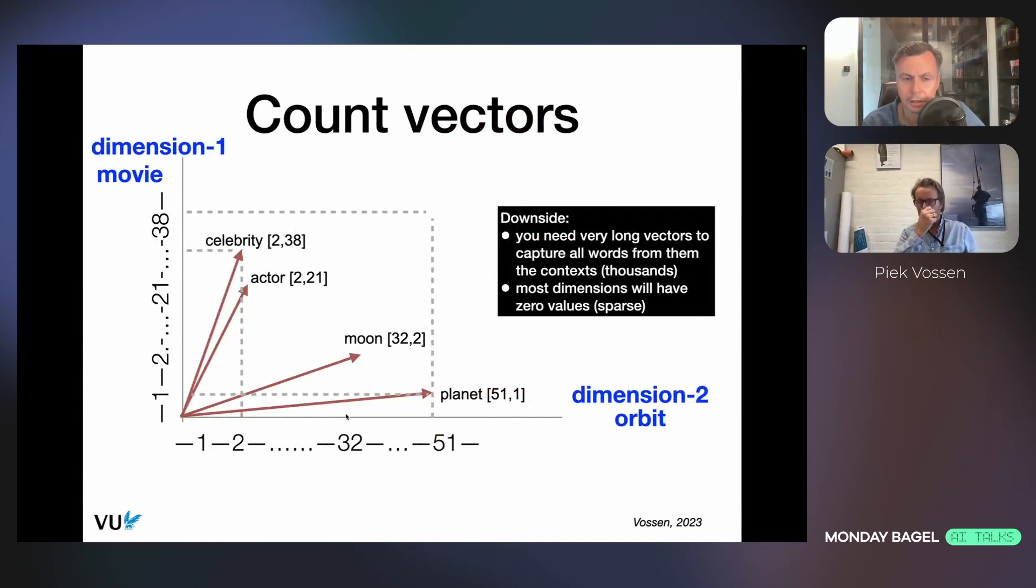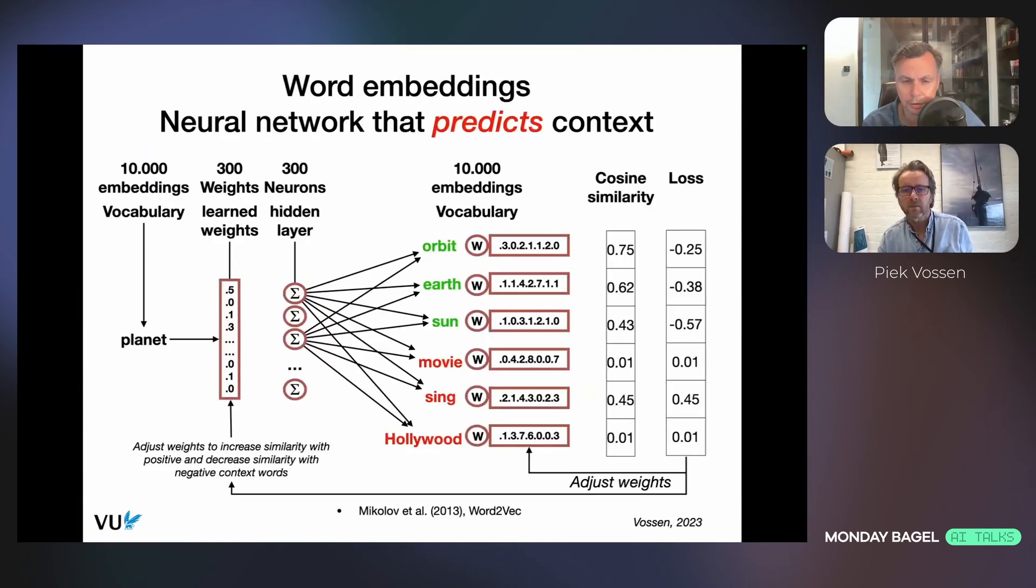Can you explain why sing has 0.45 similarity to the, let's say, Sun? Is it a mistake or something else? In the beginning, the model doesn't know what the correct representation is. We only tell the model a planet does not occur with sing. It does occur with Earth. So that means if it has a high similarity with sing and also a similar similarity for Sun, it needs to change it to make it more similar to Sun and less similar to sing.